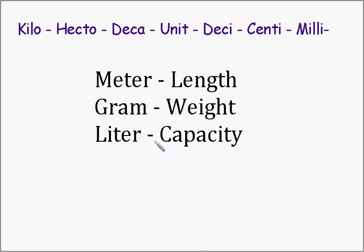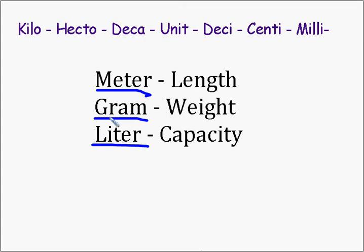We're studying the metric system in math, and the metric system has three basic units: the meter, the gram, and the liter. The meter is about the length of a doorway. Grams for weight is about a handful of paper clips, and a liter is a large water bottle.